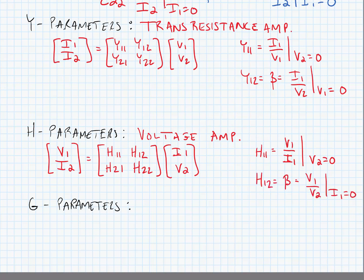H12, which will be our beta term for this type of network, is equal to V1 over V2 when I1 is equal to 0. In other words, we're finding our open-circuit voltage gain going from port 2 to port 1. H22 is equal to I2 over V2 when I1 is equal to 0 — in other words, we're finding the output admittance when the input port is open-circuited.